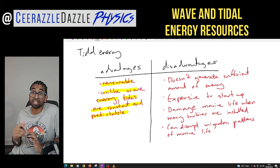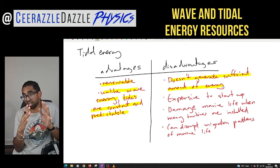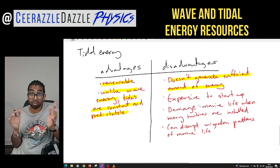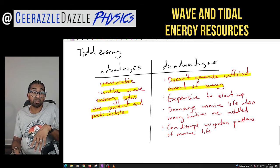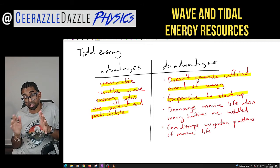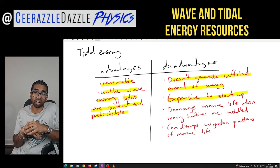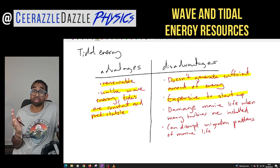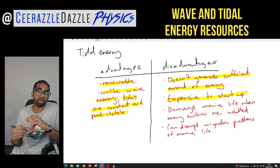Disadvantages of tidal energy: it doesn't generate sufficient amounts of energy, so you'd need to install many of them to generate a significant amount of electricity. They are also expensive to start up because you're installing them on the sea floor. They can damage marine life if many turbines are installed. Finally, they can disrupt the migration patterns of marine life that swim upstream or downstream.